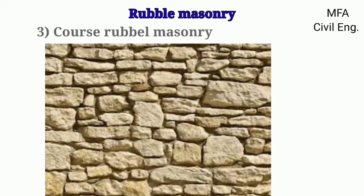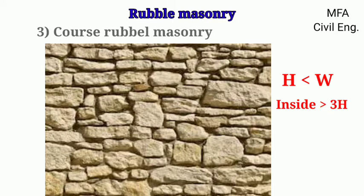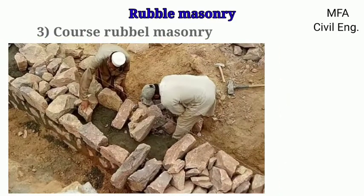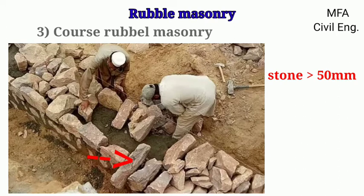In coarse rubble masonry, stones are laid in level courses. In each course, header stones of a full course height are placed at certain intervals. Each header stone has a width not less than its height and is inserted into the wall at least three times its height. The size of stone used in the masonry is between 50 mm to 200 mm. Stones of equal height should be used in every course and the joints are not more than 50 mm in thickness. The stones used between the header stones should not be smaller than 50 mm in thickness, and header stones of successive courses should not be placed one above the other.